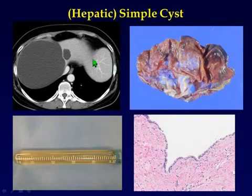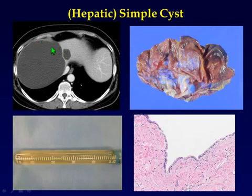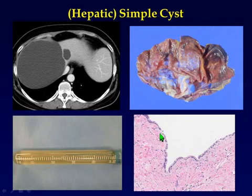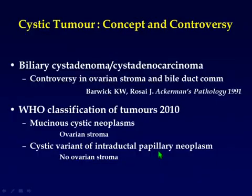Have a look — this is a nice case of a simple cyst. Very simple, clear, crystal clear, and smooth. It is covered by a paper-thin membrane, contains serous fluid, and is lined by a single, normal biliary epithelium.